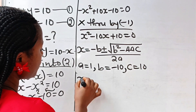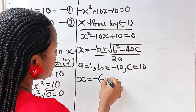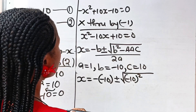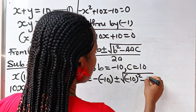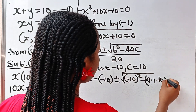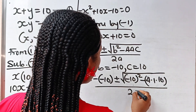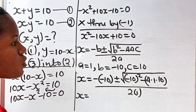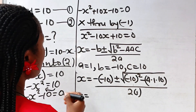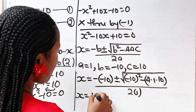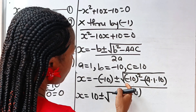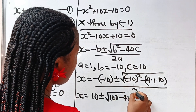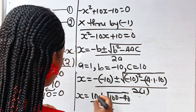So if we do that, we have x is equal to minus(minus 10) plus or minus the square root of (minus 10) squared minus 4 multiplied by 1 multiplied by 10, divided by 2 multiplied by 1. So we have x is equal to — minus minus gives us plus — so we have 10 plus or minus the square root of 100 minus 40, all divided by 2.